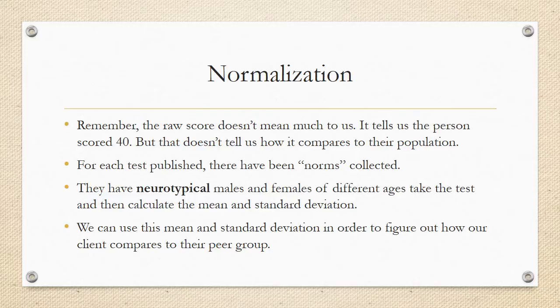Let's look at the process of normalization a little bit closer. Remember, the raw score doesn't mean anything to us. It tells us the person scored 40, but that doesn't tell us how it compares to their population. So as I said, for each test published, there have been norms collected. They have taken neurotypical males and females of different ages to take the test, and then they have calculated the mean and standard deviation. What I mean by neurotypical is that these are people who are not known to have any sort of concern that would have contributed to their performance. We can then use this mean and standard deviation in order to figure out how our client or patient compares to their peer group.